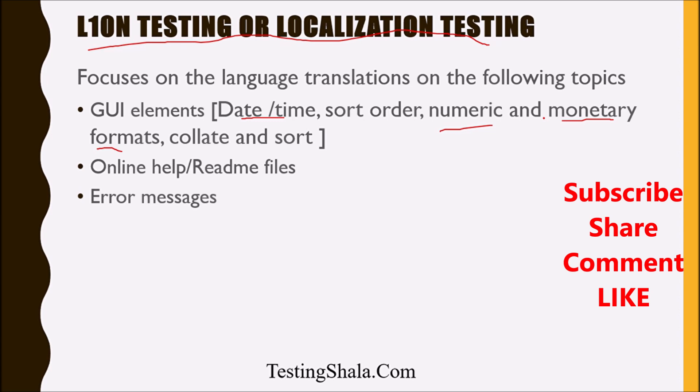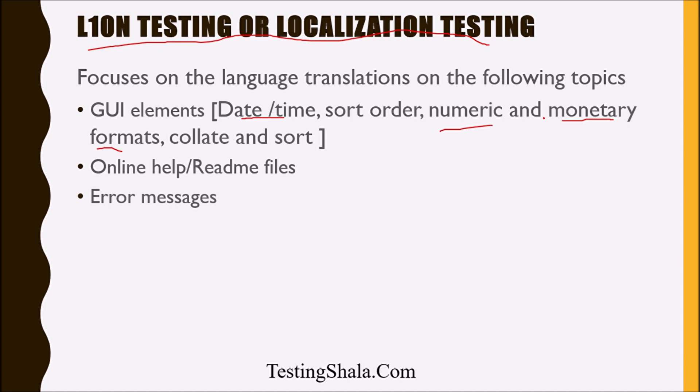The third thing to test is error messages. For example, when a username and password are invalid and I click the login button, it will say 'Invalid username or password.' When I open the same thing in Chinese or Japanese, that error message should get translated appropriately into the local language. It should not pop up in English only — it should be translated into the local language.